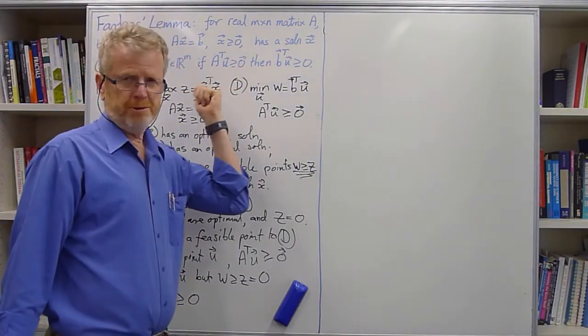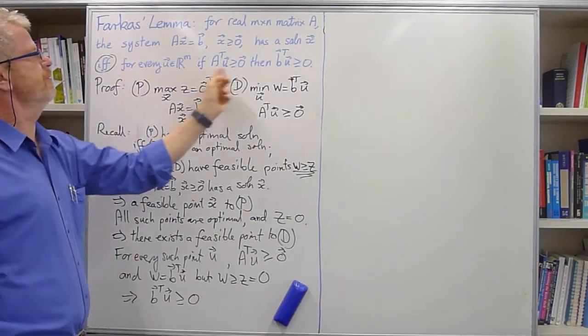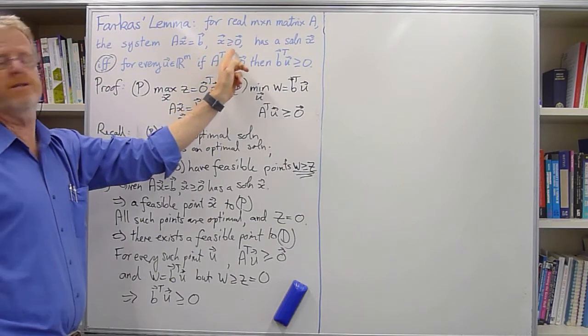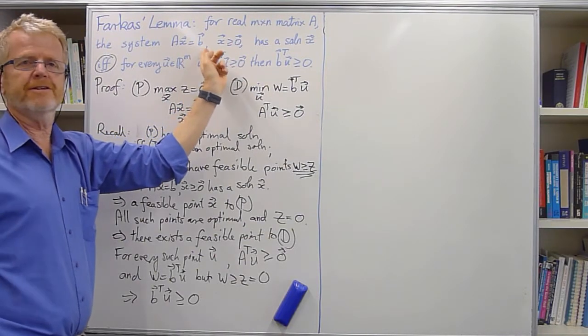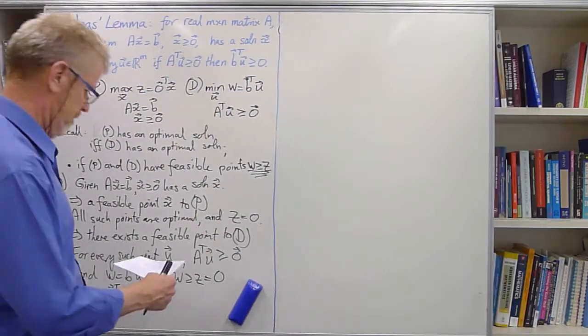All right. Now, let's complete the proof of Farkas's lemma by proving the reverse implication. That is, given this statement here, we'll establish that there's always a solution to AX equals B for X bigger than or equal to 0.